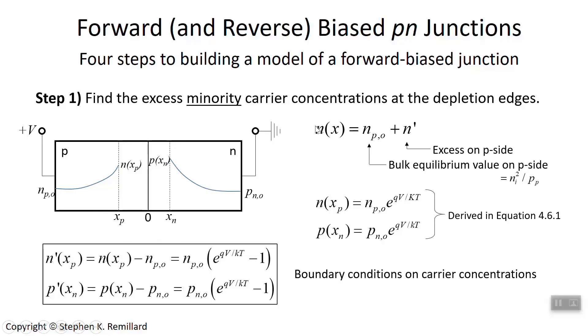Up here in this expression here, I should have probably put an of X on the N prime as well, because that's what's got position dependence. N sub P zero is just an equilibrium value, so it's a constant. N prime is where the X dependence is that gives N of X an X dependence. It's reflected a little more explicitly here.